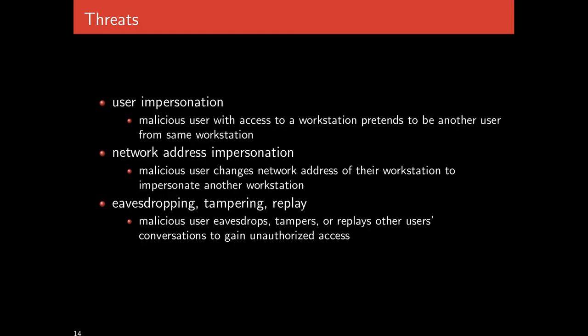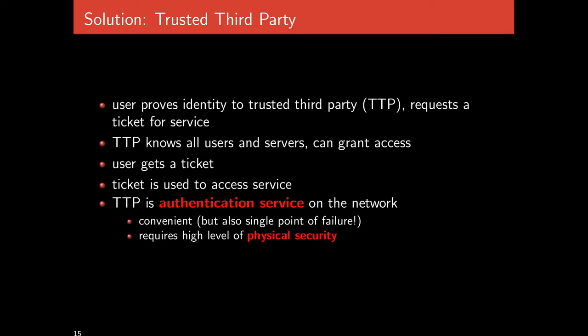They considered a variety of threats: user impersonation, where a malicious user with access to a physical workstation pretends to be another user; sending bad network addresses by tampering with IP addresses in packets; eavesdropping on the network; tampering with packets while transmitted; and replay attacks. Kerberos was designed to thwart all of these attacks.